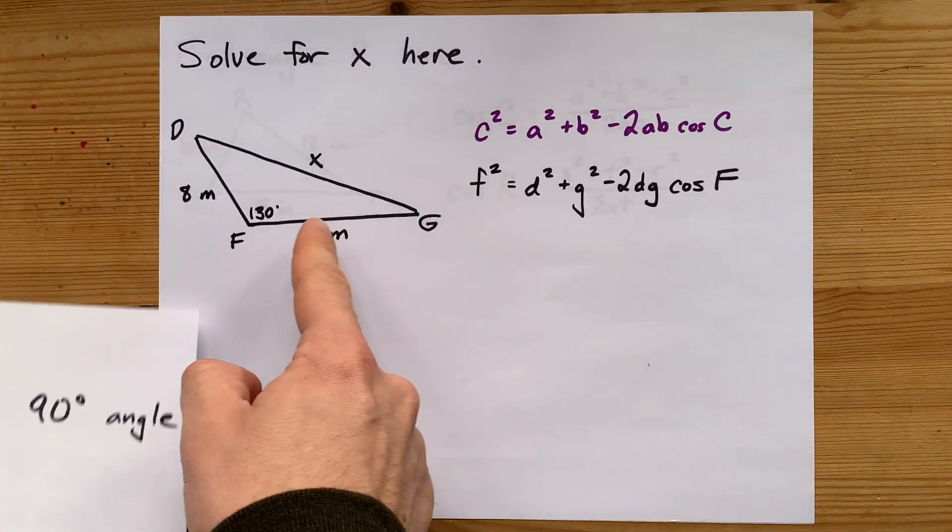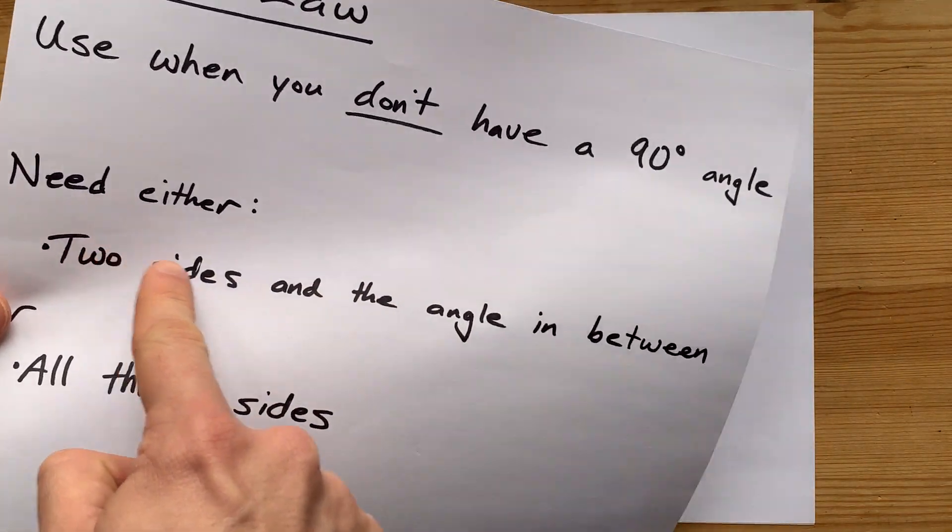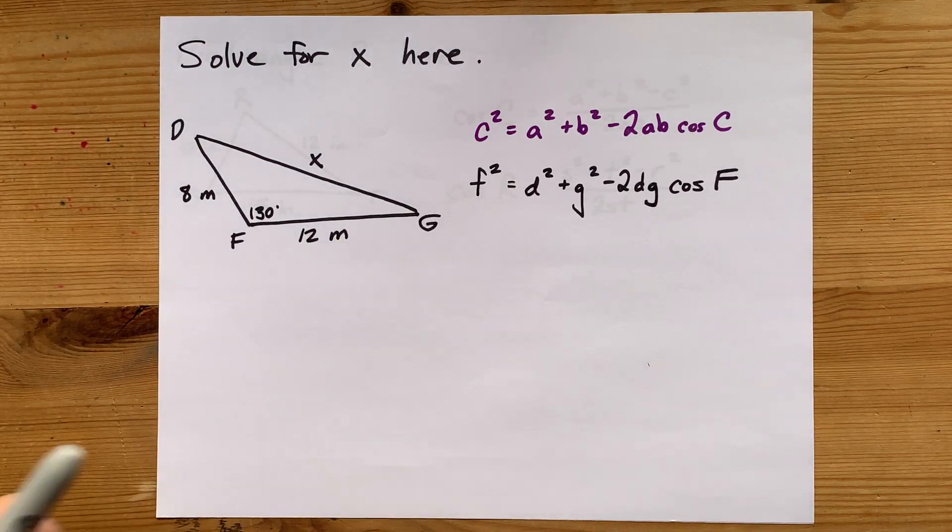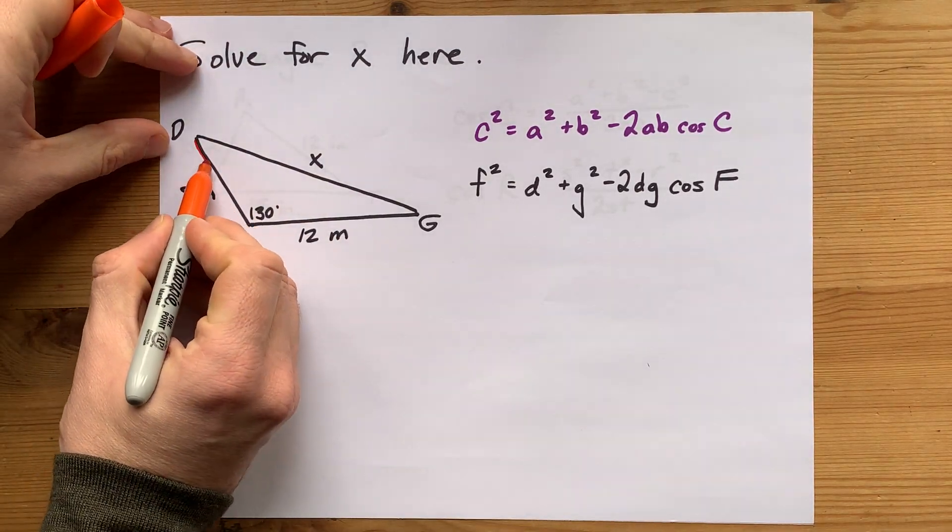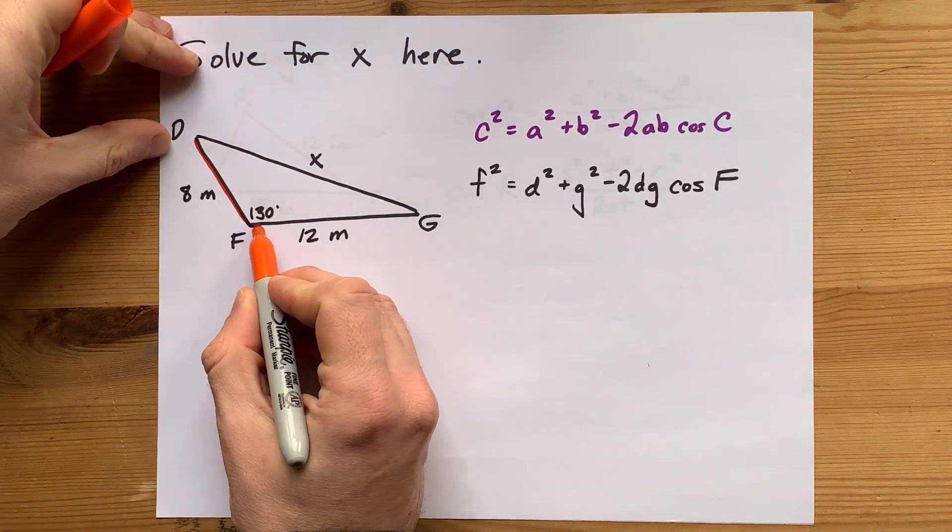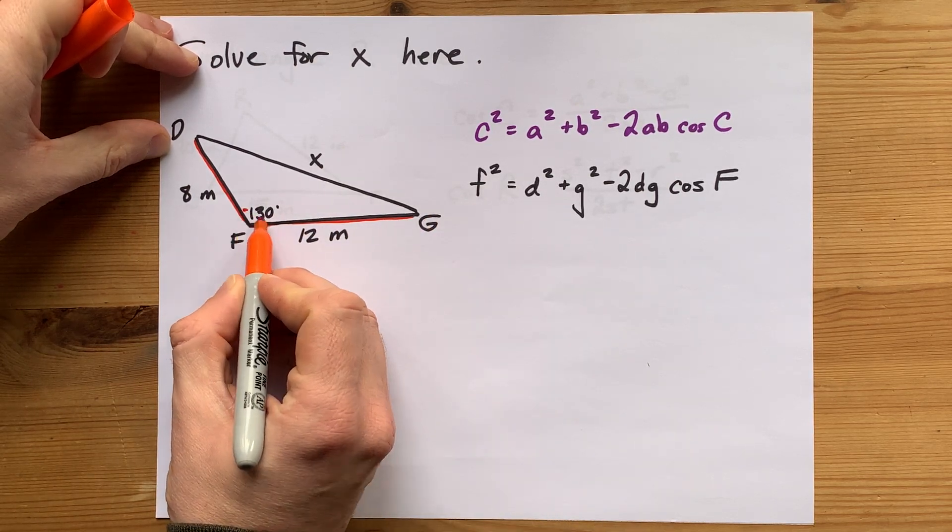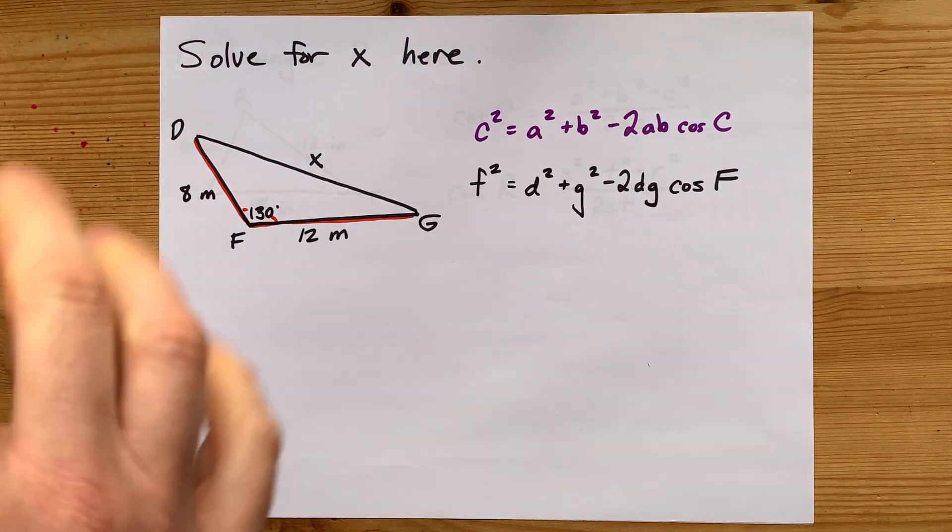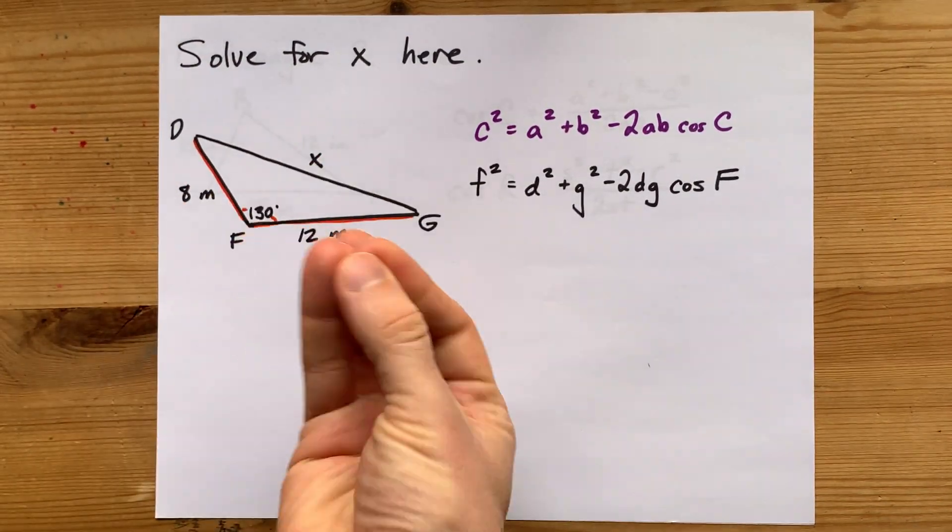This first example that I have drawn for you is two sides and the angle that's in between them. If you take a look, I'm giving you the length of this side, I'm giving you the length of this side, and I'm giving you the angle that is made by those two side lengths. This is a case of cosine law.